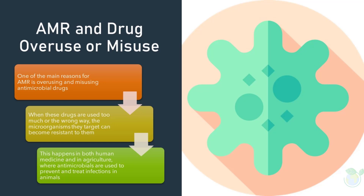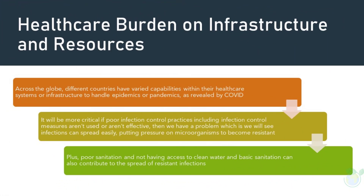One of the main reasons for AMR is overusing and misusing antimicrobial drugs. When these drugs are used too much or the wrong way, the microorganisms they target can become resistant to them. This happens in both human medicine and in agriculture, where antimicrobials are used to prevent and treat infections in animals.